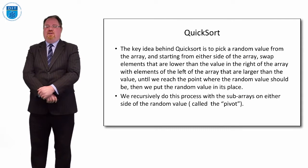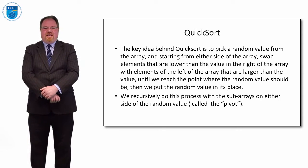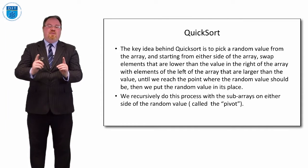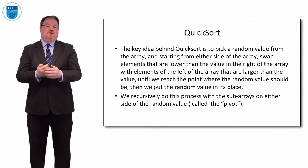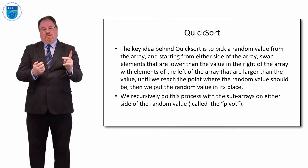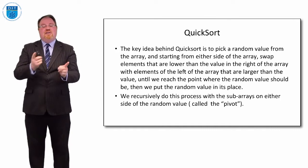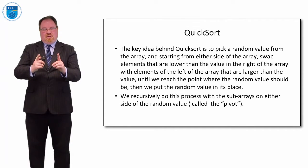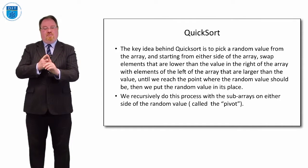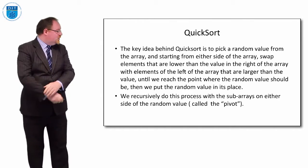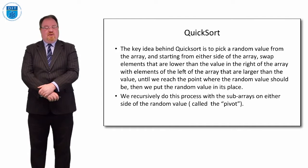His technique is interesting. You pick a value — usually the first element of the array — and then you have a pointer on the left and right of the rest of the array. You move the pointer on the left along until you find an element that is larger than the pivot value, and you move the right pointer across until you find a value that's smaller, then you swap those two values. Keep doing that until the pointers meet each other in the middle. We call that random value the pivot point.